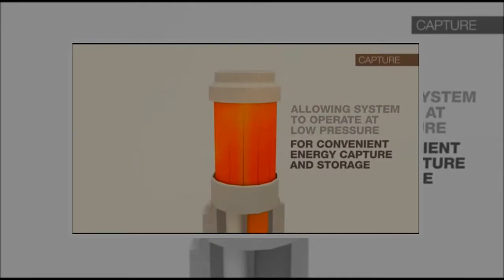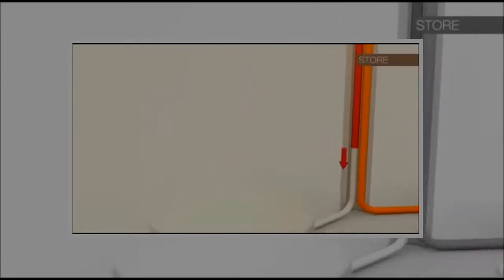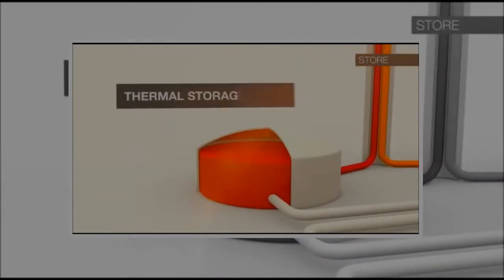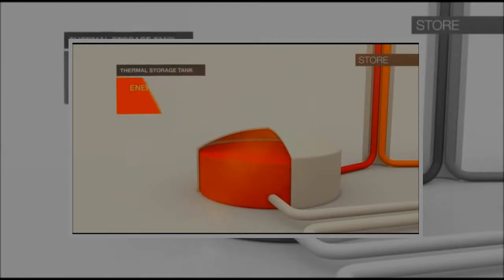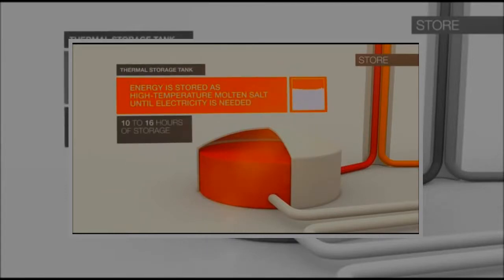After passing through the receiver, the molten salt then flows down the piping inside the tower and then to a thermal storage tank where the energy is stored as high-temperature molten salt until electricity is needed.